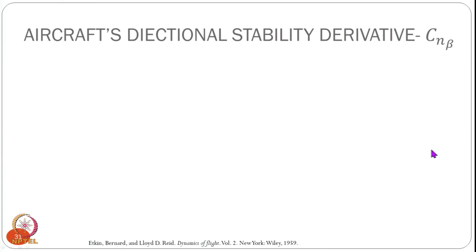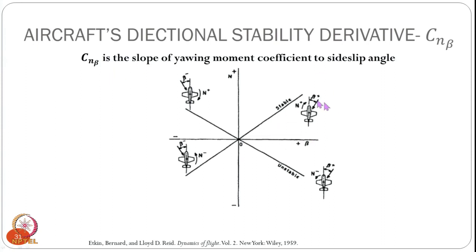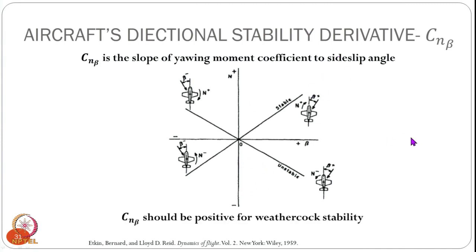Similar to CM alpha for pitch, we define the directional stability derivative CN beta, which is the slope of the yawing moment coefficient to the sideslip angle. For directional stability, CN beta should be positive to ensure weathercock stability — the stable line should have a positive slope. If it has a negative slope, the aircraft is not directionally stable.